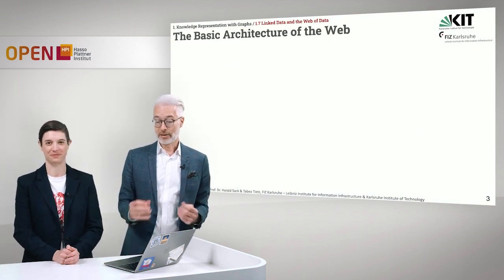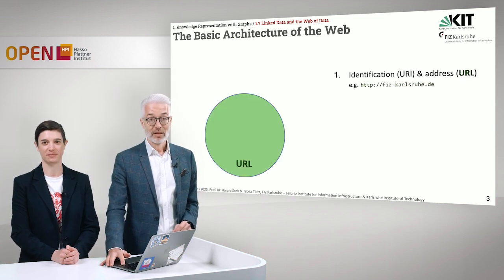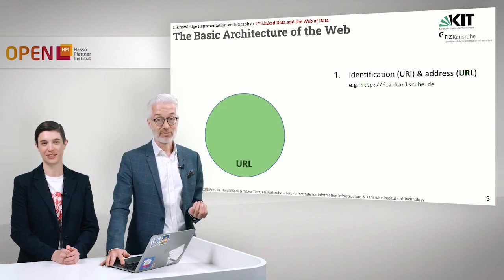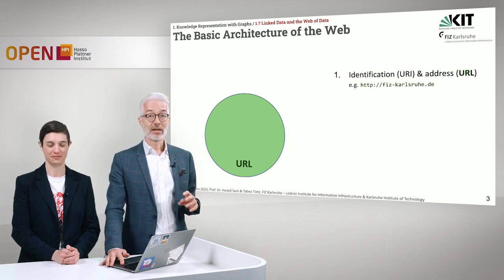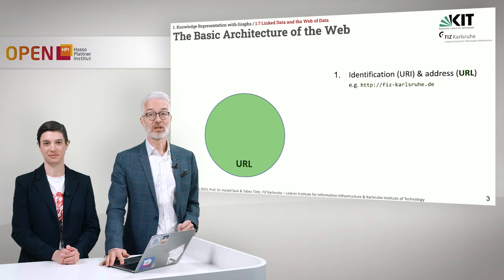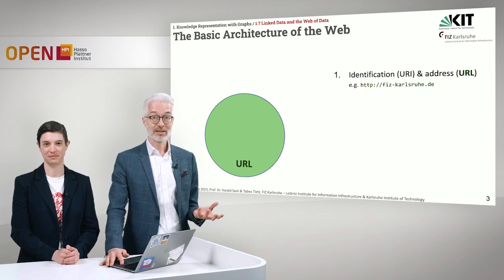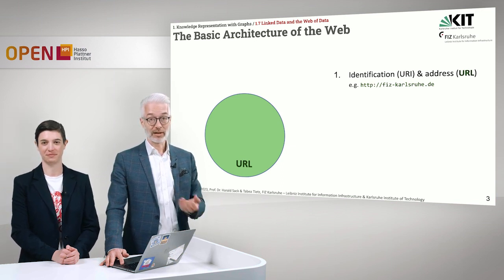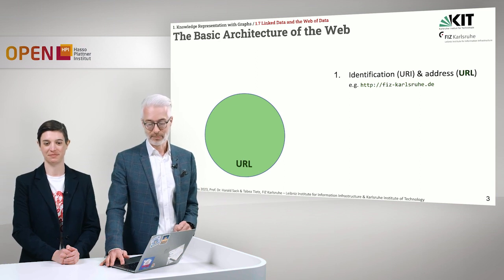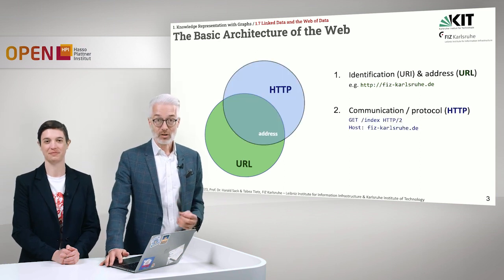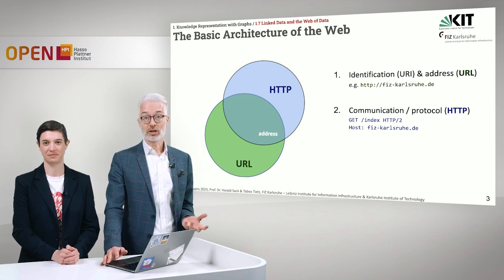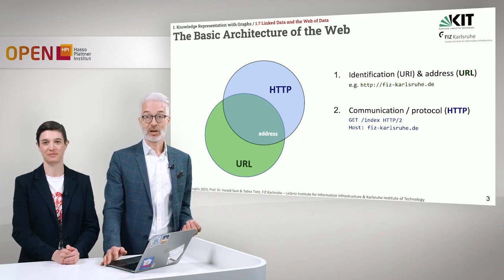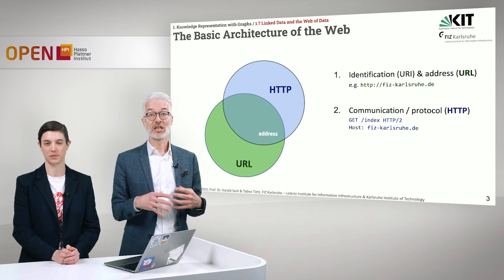Let's have a look at the basic architecture of the web. We start with addressing and identifying things. In the traditional web, this is done via a URL, which is a Uniform Resource Locator. This gives you the address of something, like for example here FIZ Karlsruhe. The second component in the basic web architecture is HTTP, the Hypertext Transfer Protocol, and this is for communication.